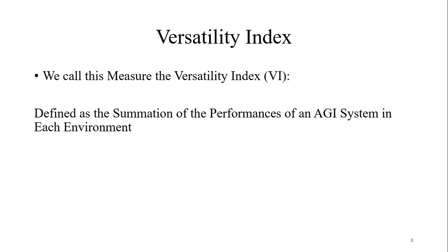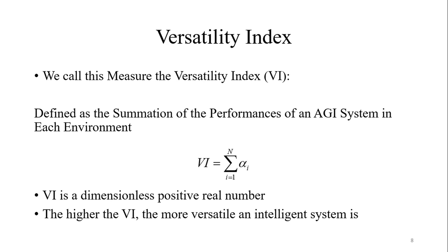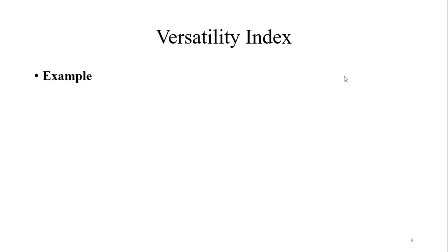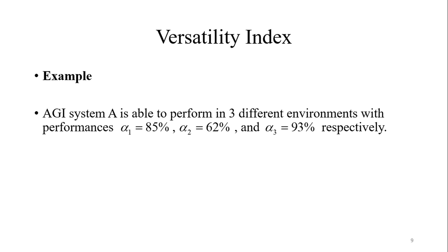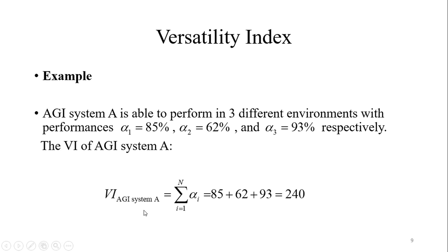The versatility index VI is defined as a summation of the performances of an AGI system in each environment i. VI is a dimensionless positive real number, and the higher the VI, the more versatile the intelligent system is. As an example, suppose that AGI system A is able to perform in three different environments with performances alpha_1 equals 85%, alpha_2 equals 62%, and alpha_3 equals 93%. The VI of AGI system A equals 85 plus 62 plus 93, which equals 240.